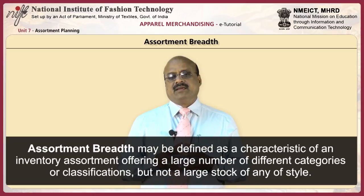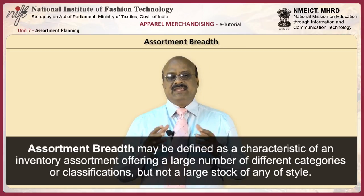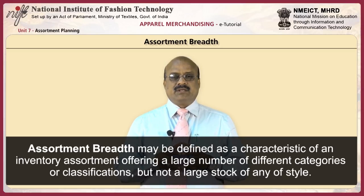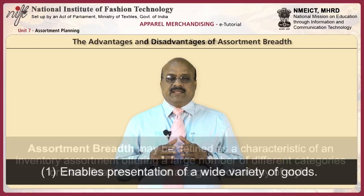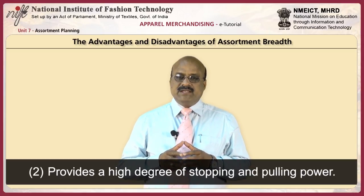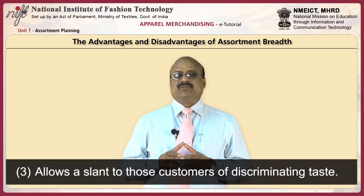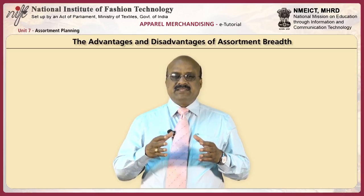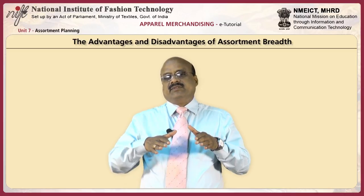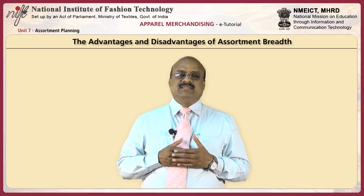Assortment breadth may be defined as a characteristic of an inventory assortment offering a large number of different categories or classifications, but not a large stock of any one style. This is a broad and shallow assortment. Stores and departments catering to middle and upper income consumers usually use this kind of inventory assortment. The advantages of assortment breadth are: it enables presentation of a wide variety of goods, provides a high degree of stopping and pulling power, and allows a slant to customers of discriminating taste. A major disadvantage is that frequent reordering is needed, making it a costly method of inventory.